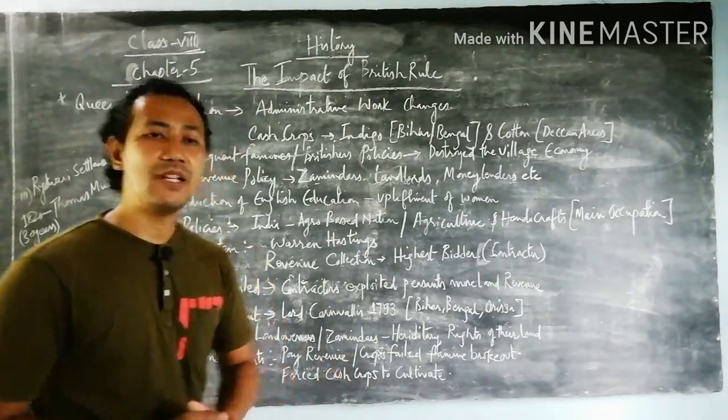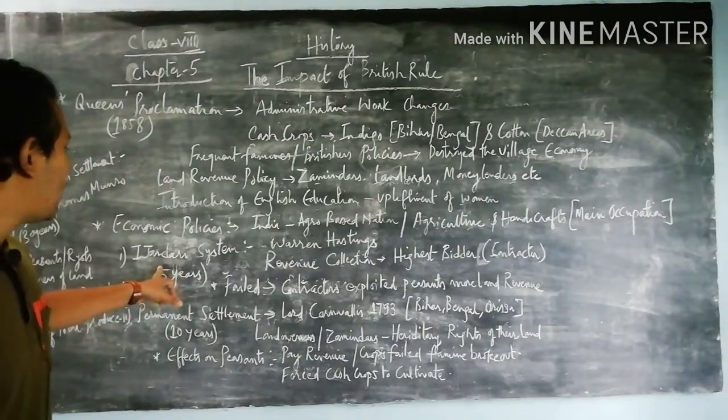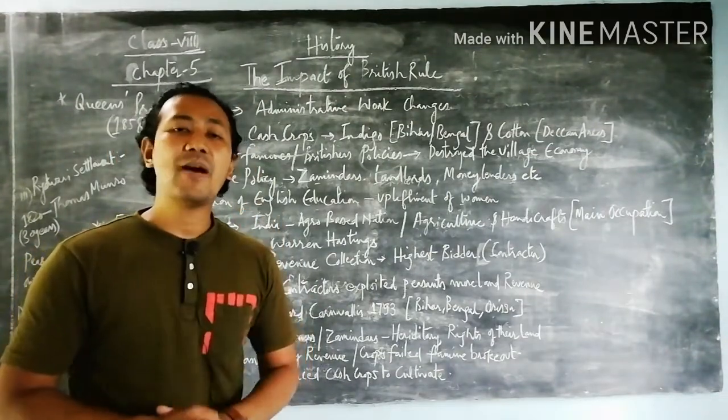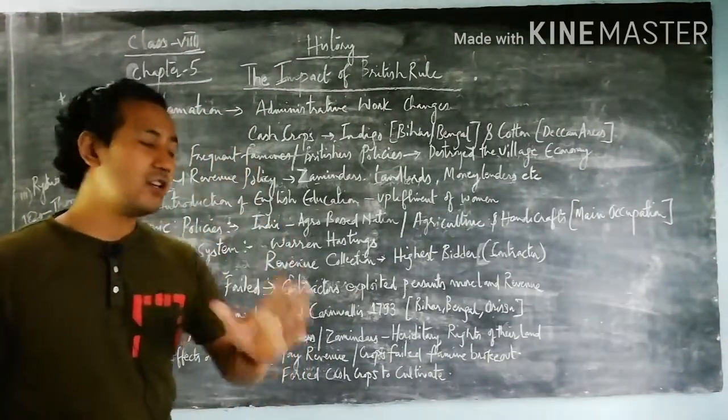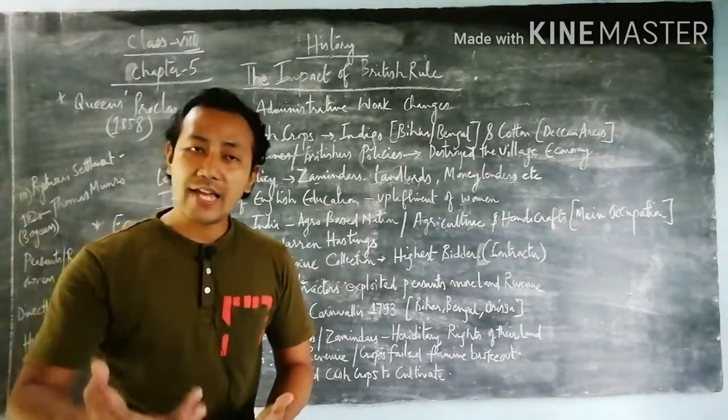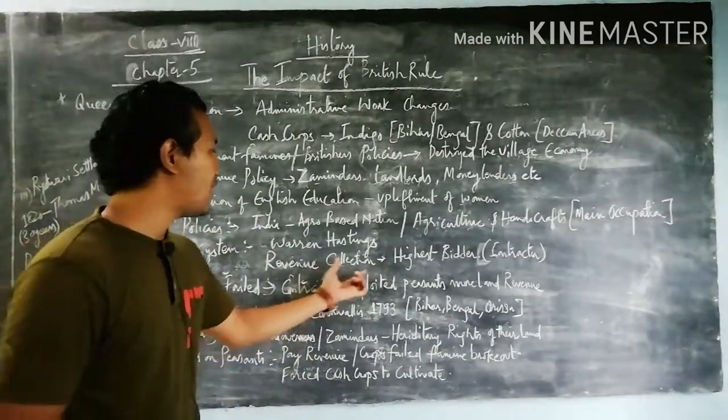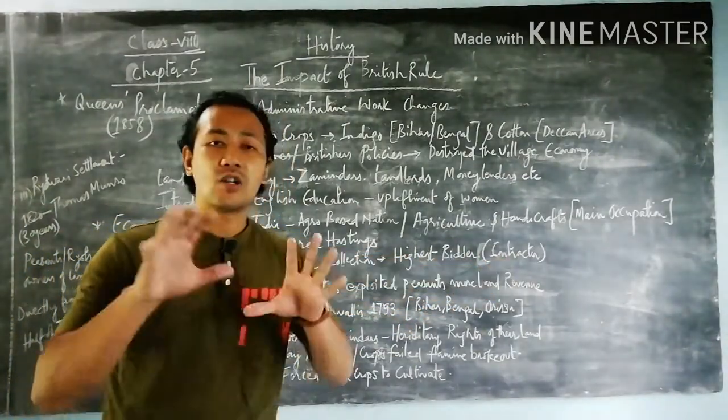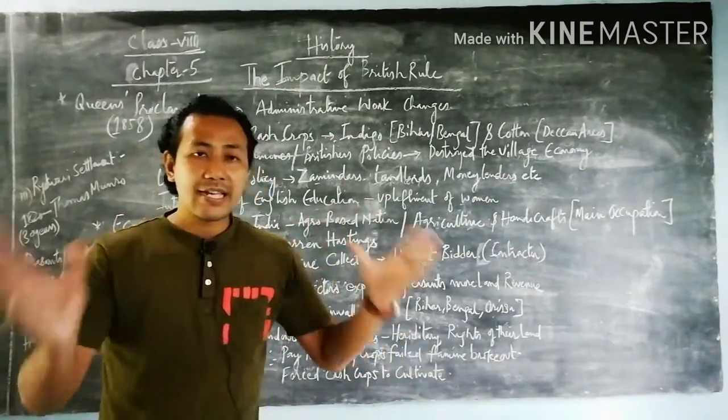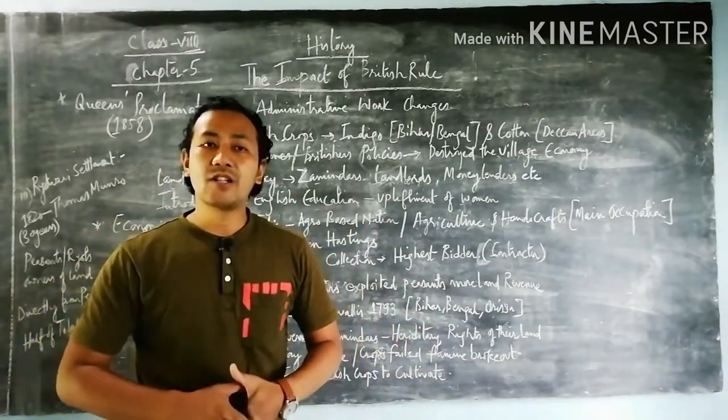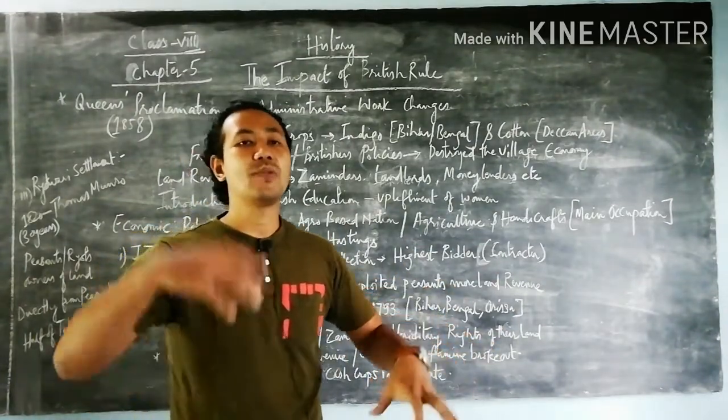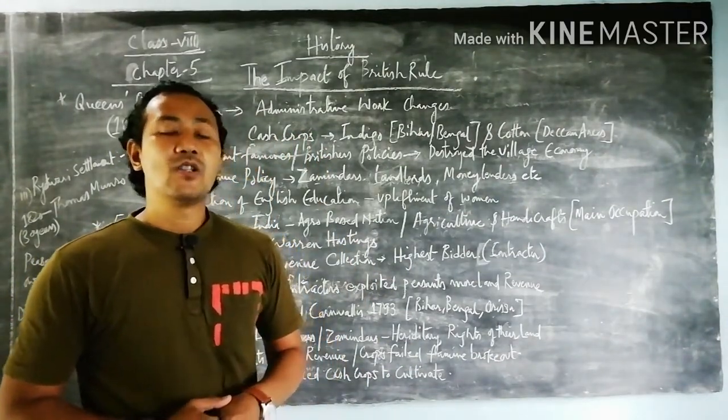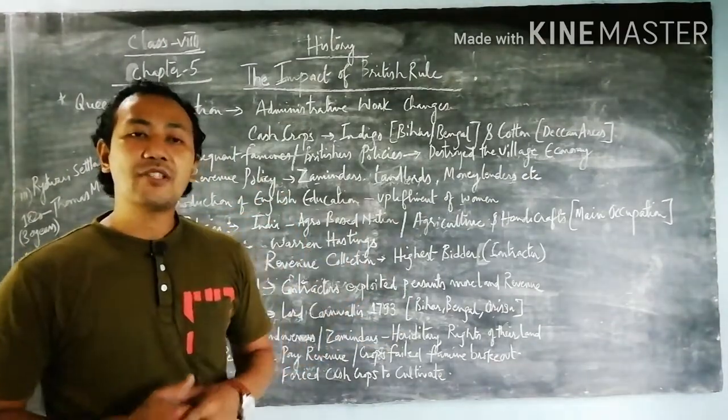Talking about the first, known as Isadari System. This was one of the first policies implemented by the British for nearly five years by Warren Hastings. The revenue collection would be taken by the highest bidder - contractors who would take particular areas and give that amount to the British government.